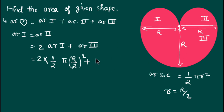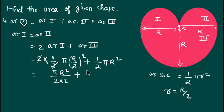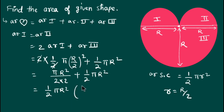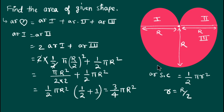Plus the area of the third part, which is ½ × π × R². We can cancel the twos, so this becomes π R² / 4 × 2 + ½ π R². Taking ½ π R² as common from both terms, we have (1/2 + 1), which gives 3/2. So we get 3/2 × 1/2, which equals 3/4 π R².